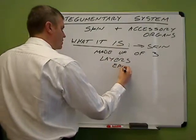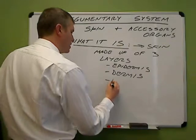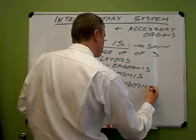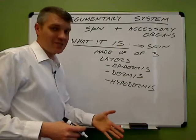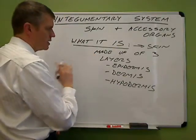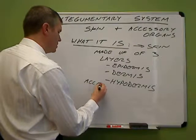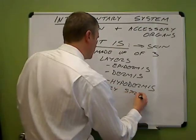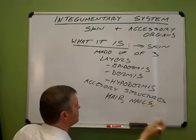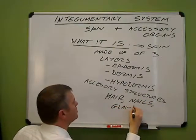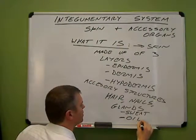To summarize what it is: the skin and its accessory organs are made up of three layers — the epidermis, dermis, and hypodermis, also called the subcutaneous layer. The accessory structures include hair, nails, and glands — specifically sweat glands and oil glands.